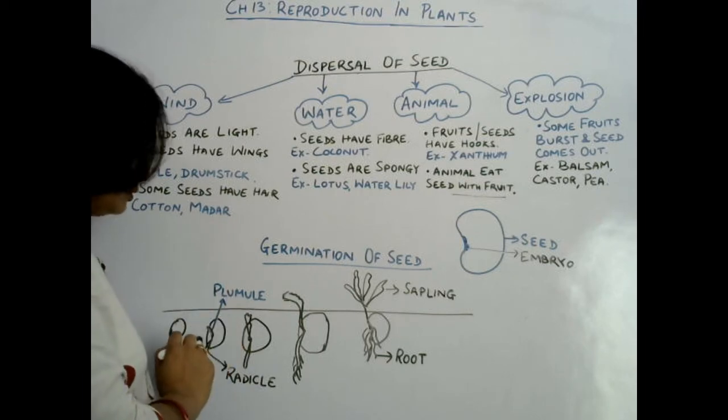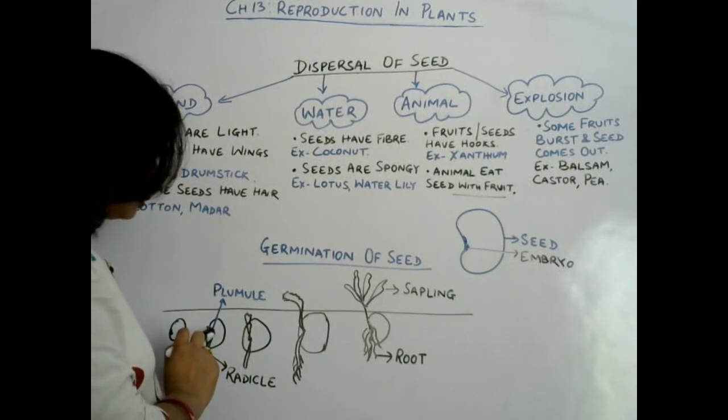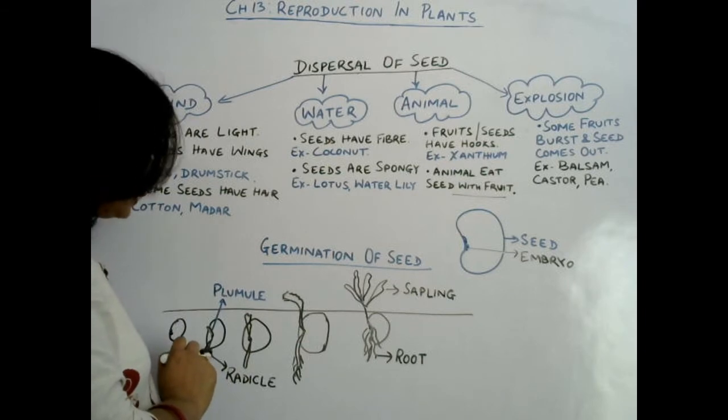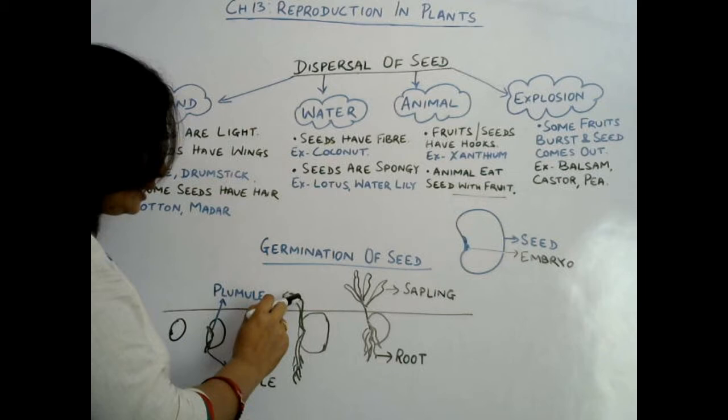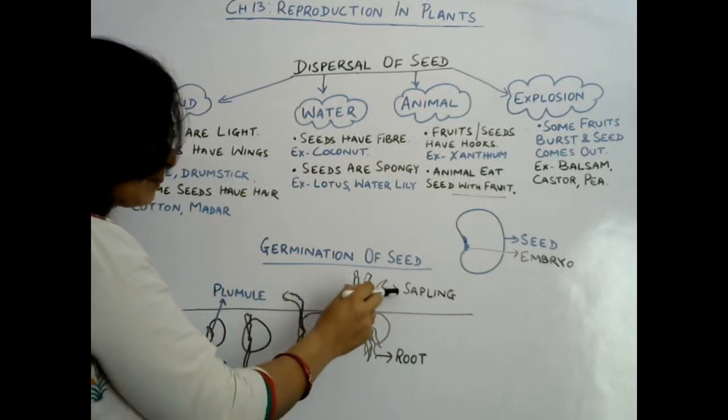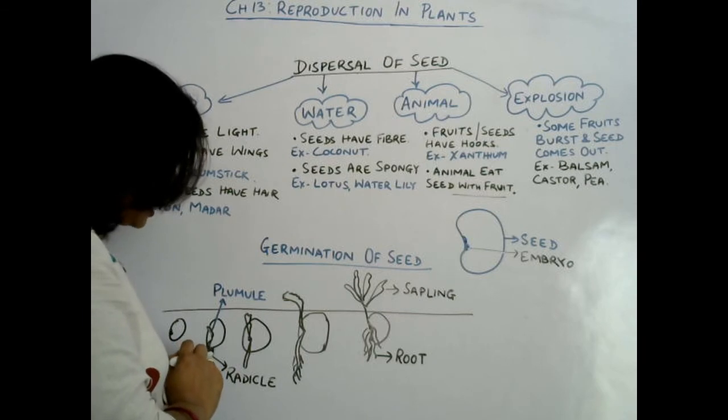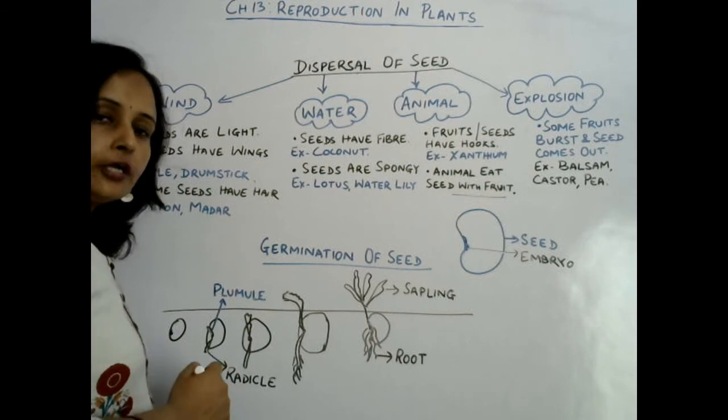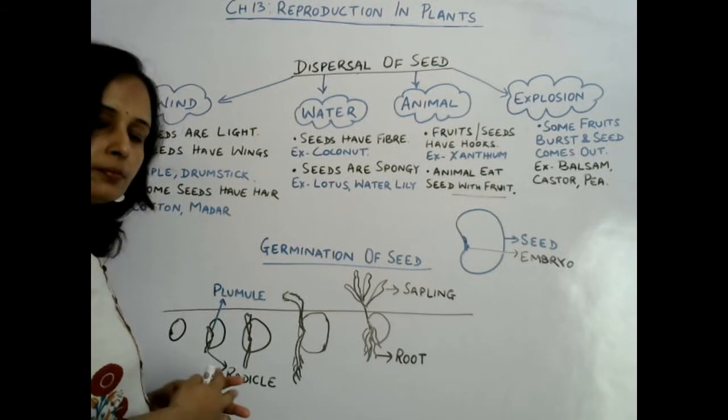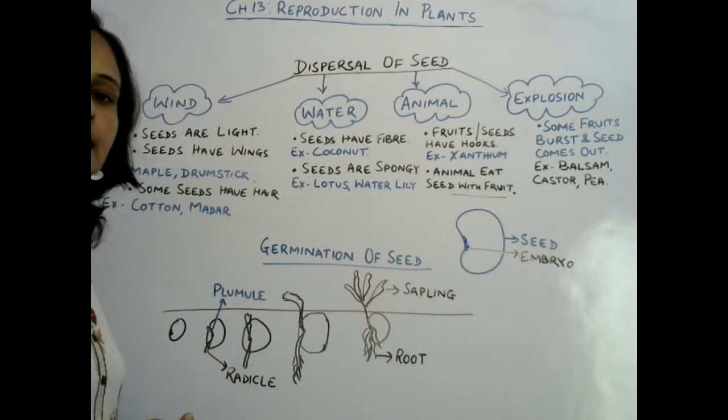This embryo of seed has one structure growing towards the upper surface, towards the upper side, and one towards the lower side. The upper side part is called plumule, which germinates into stem. Sapling germinates from this plumule. And the lower part is called radicle. Root germinates from this radicle. So in this way, germination of seed takes place and new plants arise.